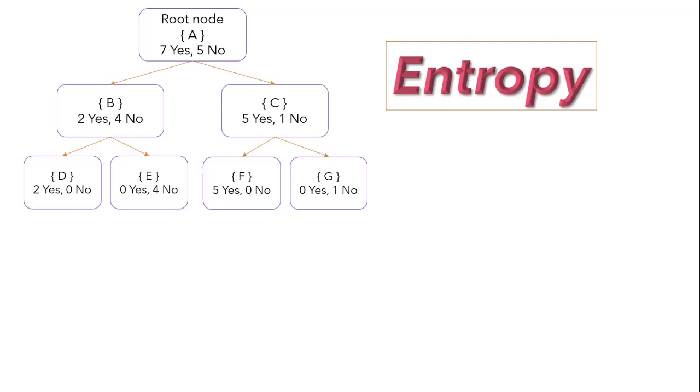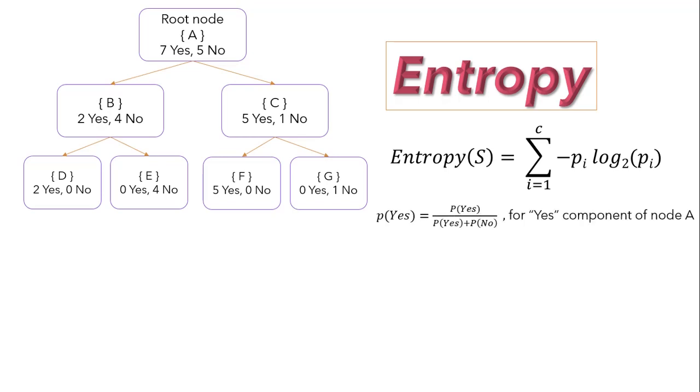We have formula for entropy as sigma i equals 1 up to c minus p_i log base 2 of p_i. Let's understand what is p over here. If I talk about node A, then p for yes can be considered as probability of yes over sum of probability of yes and probability of no. Now we have to compute the entropy for both the nodes for deciding whether we can go to node B or node C.